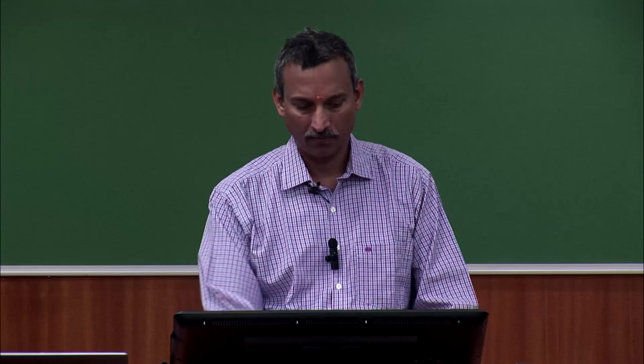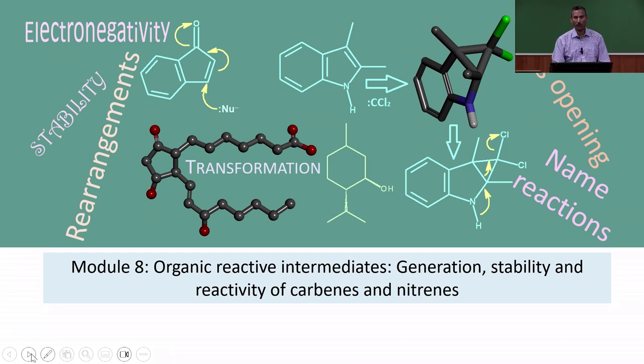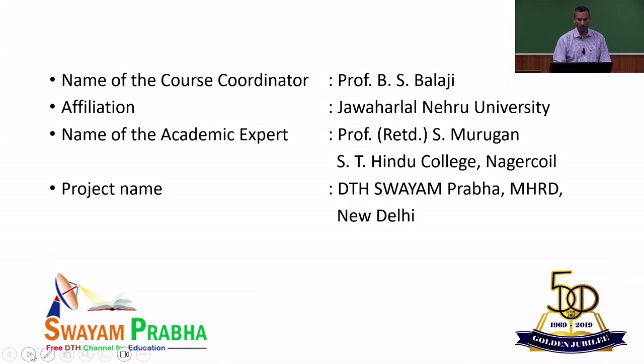A logical and systematic approach to solving organic chemistry problems for CSIR NET. In module 8, we will be looking at organic reactive intermediates — generation, stability and reactivity of carbenes and nitrenes. I am Professor Balaji, currently working at Jawaharlal Nehru University.